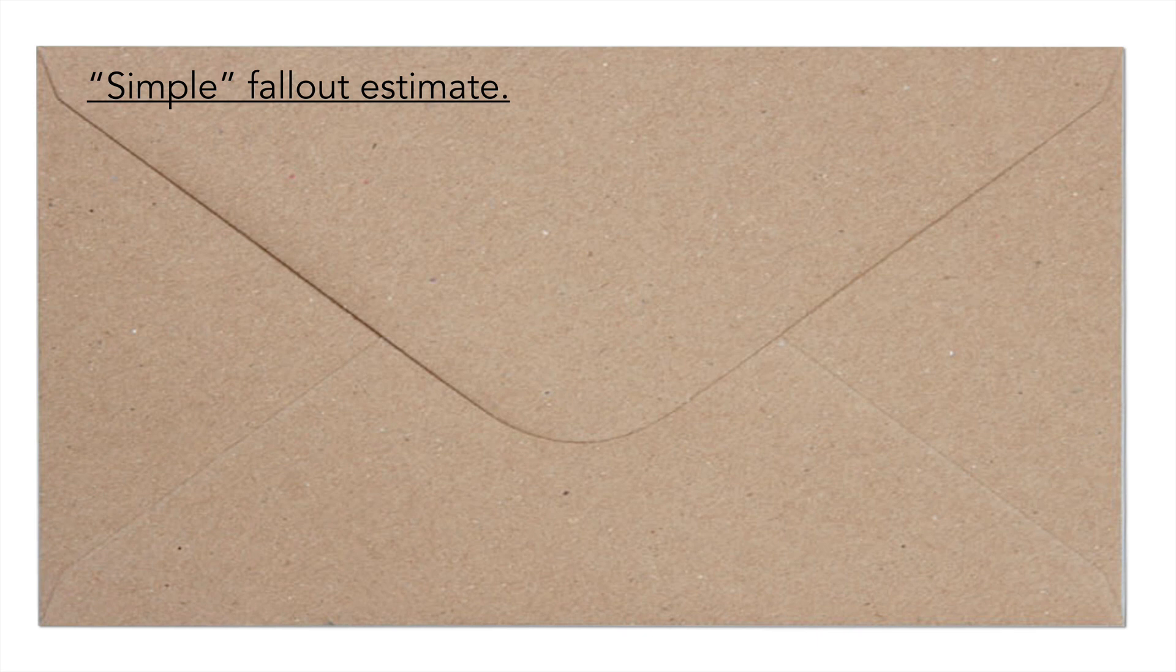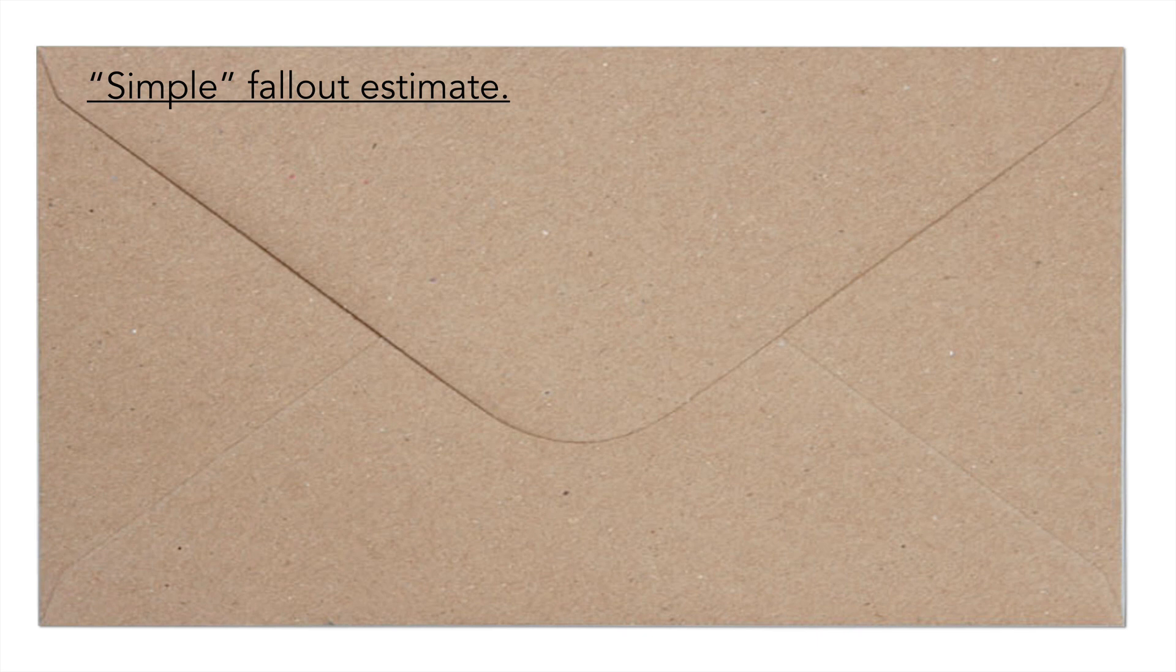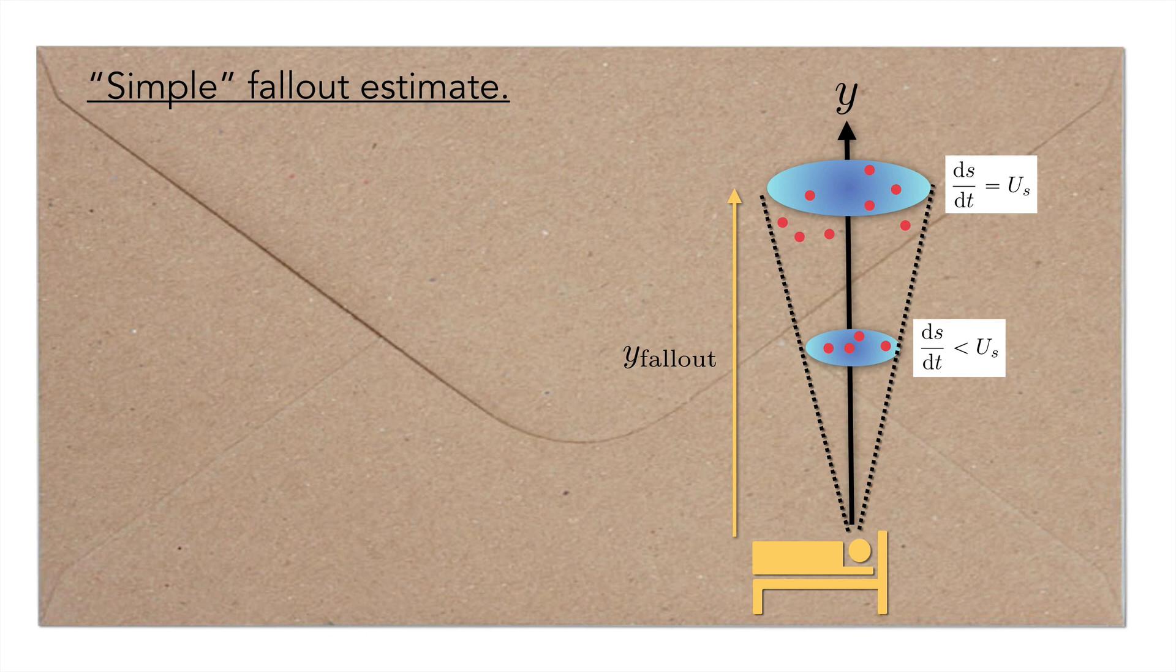Let's start with a simple estimate of the fallout distance. For simplicity, imagine lying in bed and coughing directly up. You want to know at what height fallout occurs. Initially, the cloud's velocity will be smaller than the Stokes settling velocity. The droplets will then travel with the cloud. Eventually, the cloud has slowed down enough so that its average velocity, ds/dt, is equal to the settling velocity. So in essence, you can go back to the previous model and solve for the critical time when this occurs. Once this is known, the fallout distance is known.